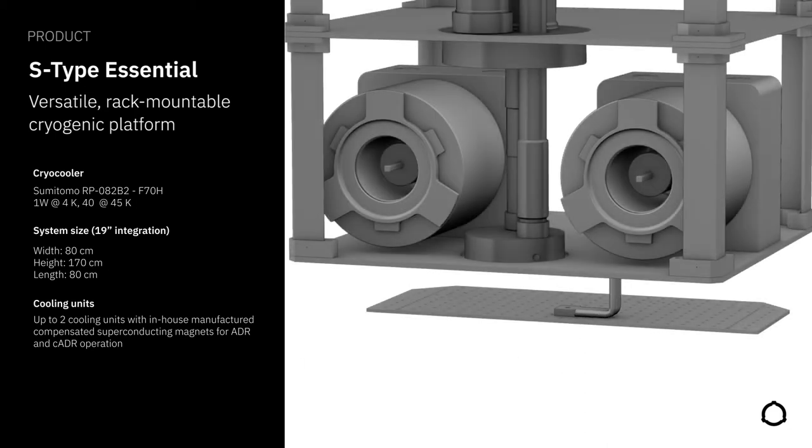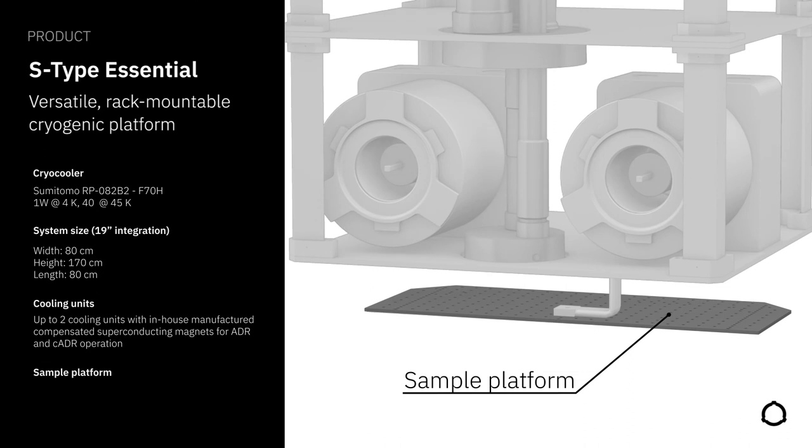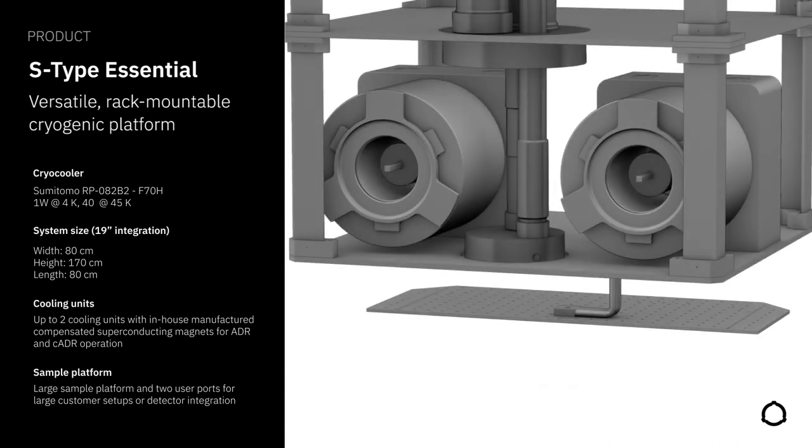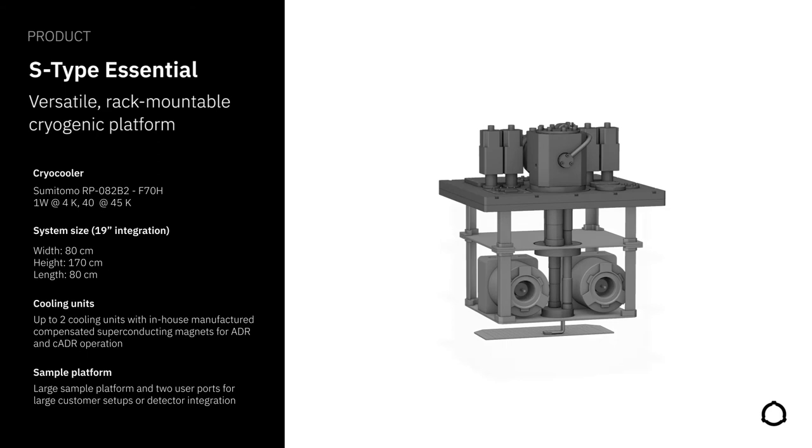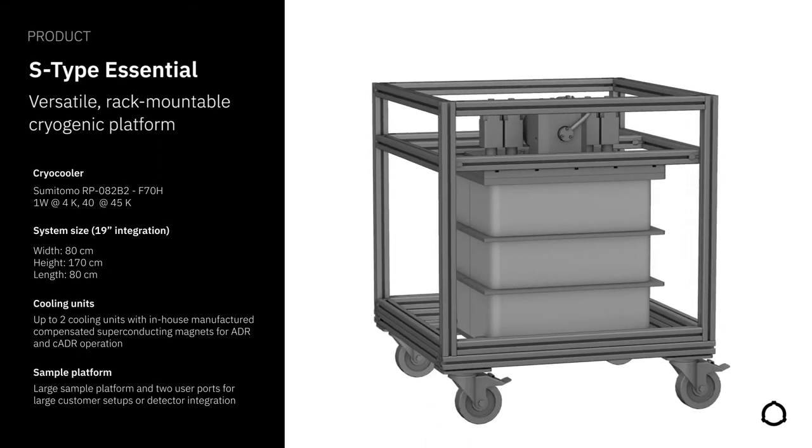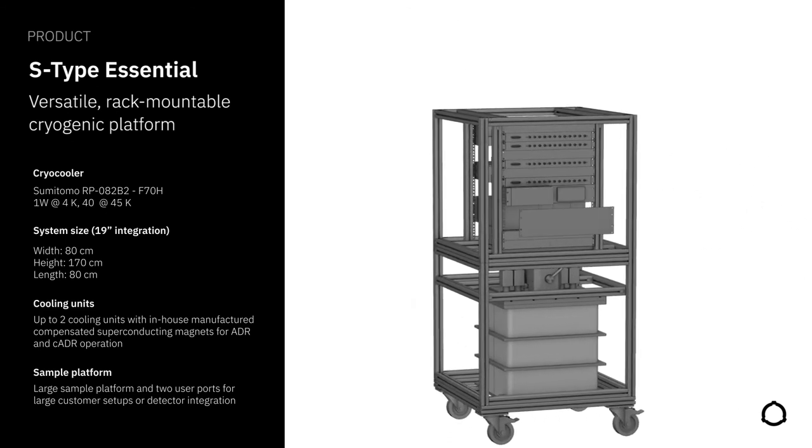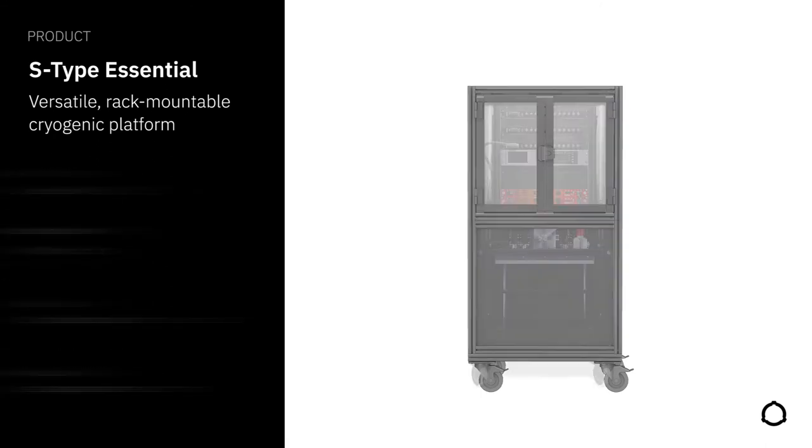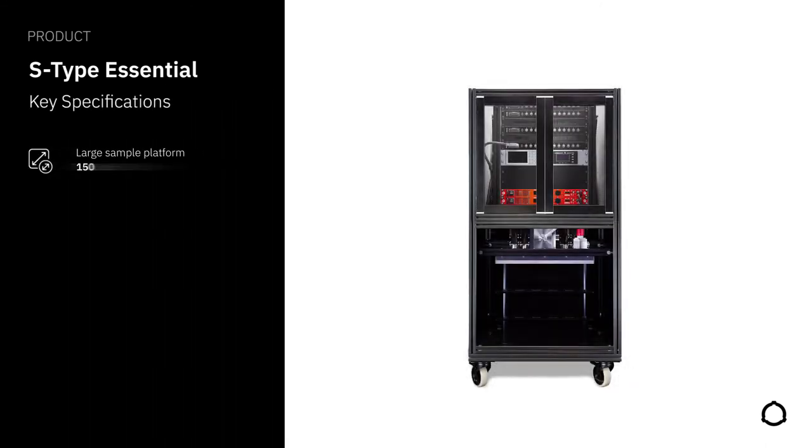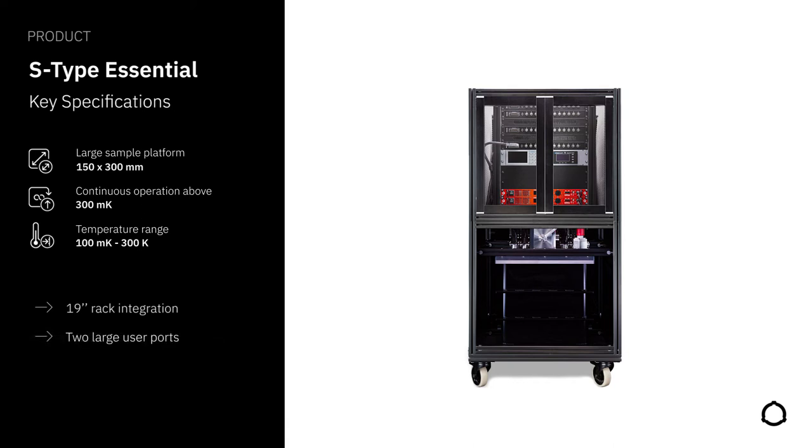While the magnet and the heat switch are mounted onto the 4K plate, the cooling medium is thermally connected to the sample stage to cool the experimental setup. The S-Type Essential offers a large, rectangular sample platform which can accommodate a complex customer setup, detector arrays or other low temperature electronics. Finally, the system is mounted in a modular 19-inch rack with one module holding the cryostat and another module including all system electronics as well as space for customer electronics. In this configuration, the S-Type Essential offers continuous cooling at 300 mK and one-shot operation down to 100 mK with a hold time exceeding 3 hours. Additionally, the system features one large sample platform and two large user ports for custom wiring such as RF lines or optical fibers.